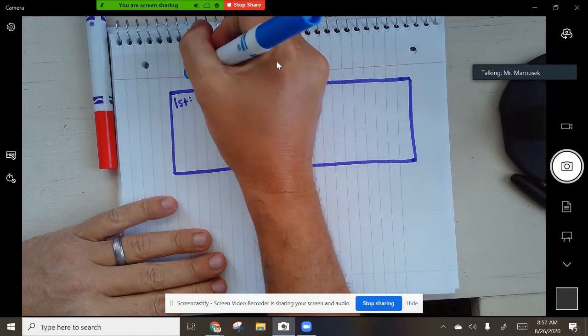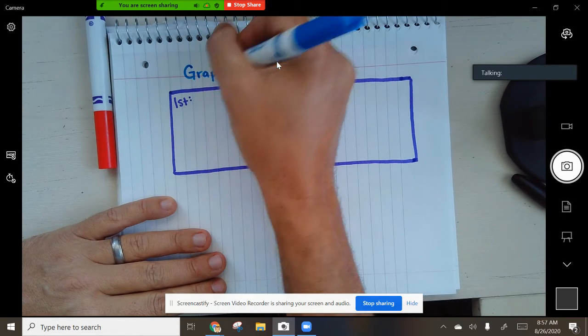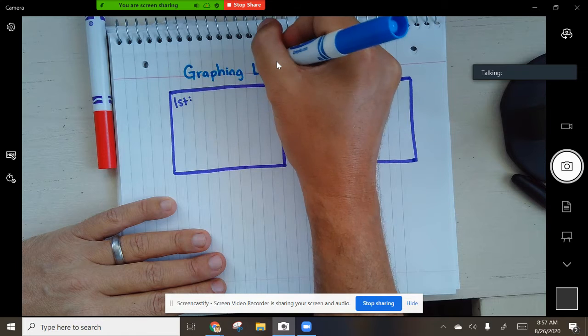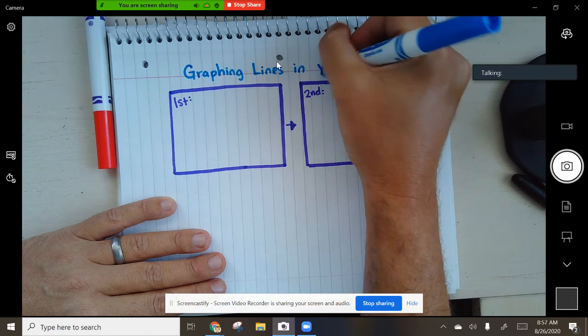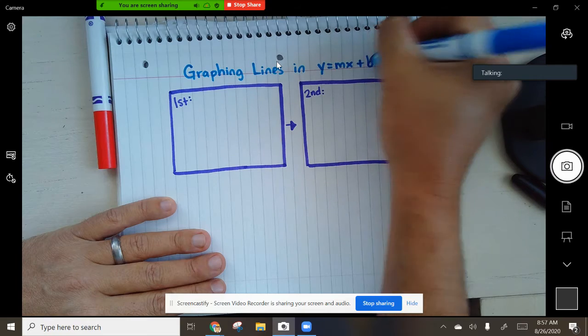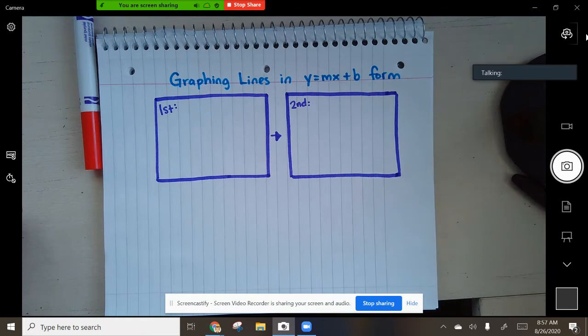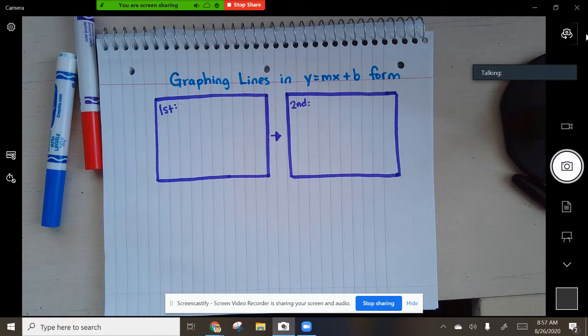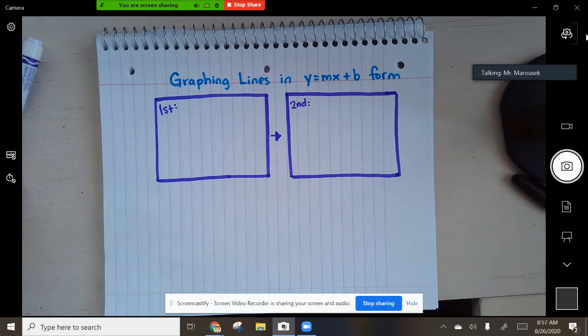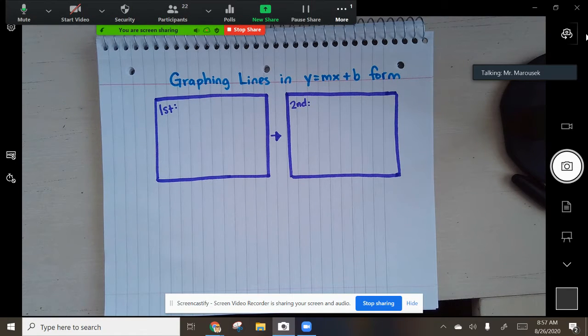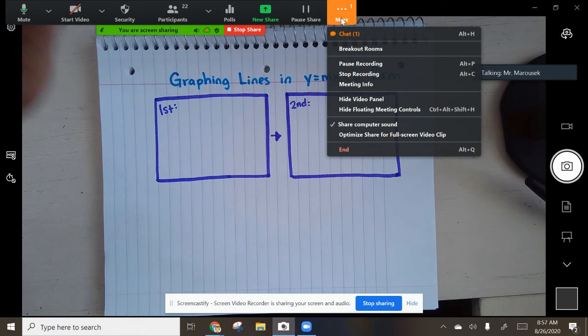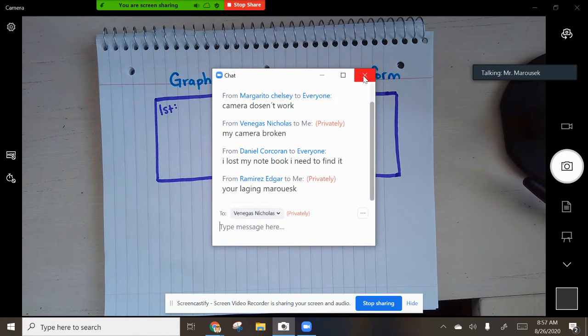So right here, I'm going to put graph. All right, go ahead and copy my title. Let me get that mouse out of the way. Graphing lines in y equals mx plus b form. So your homework today will be, the video I made today was like two minutes long. It was not long at all. And I just showed how to do one of these graphs.